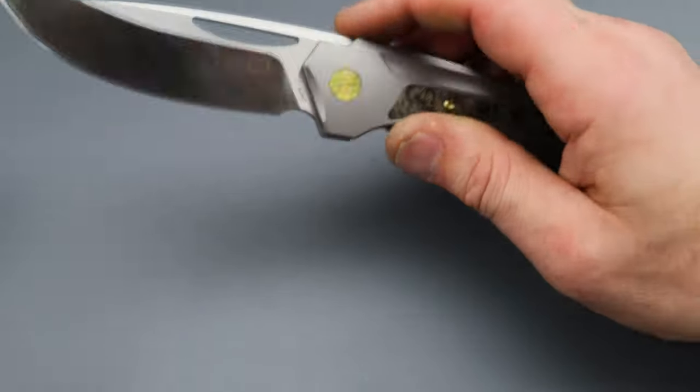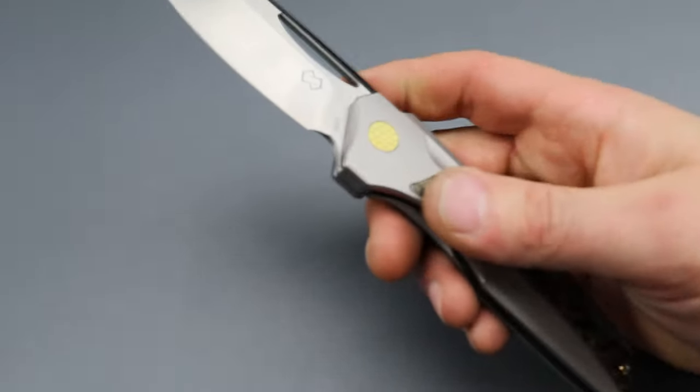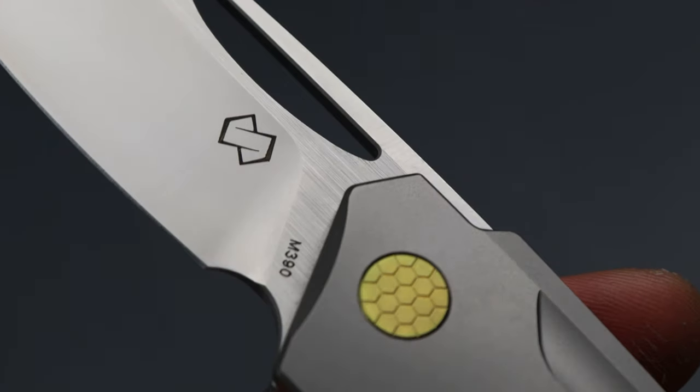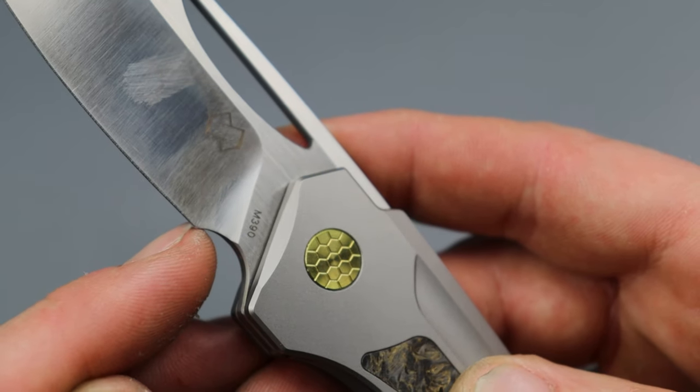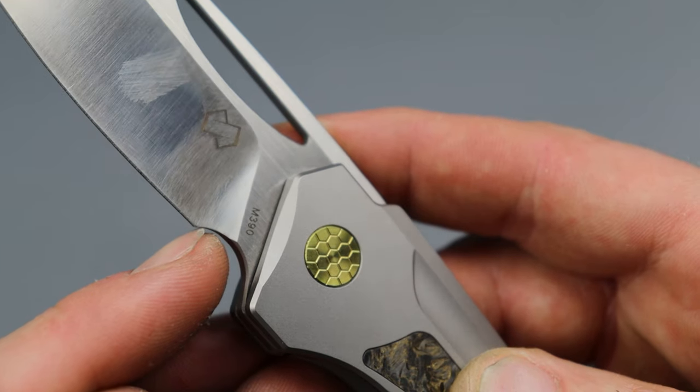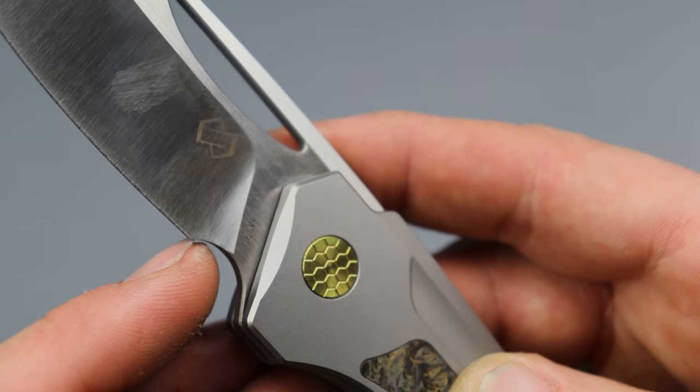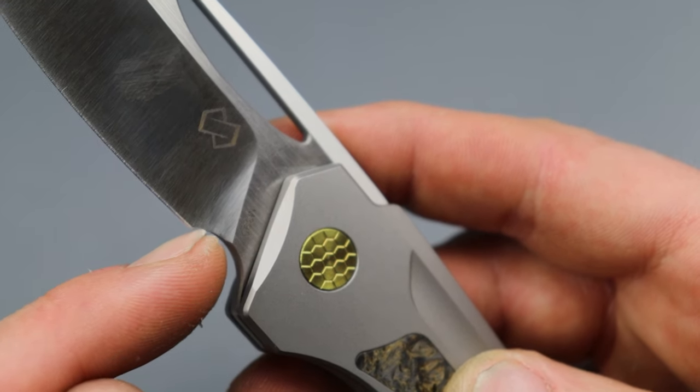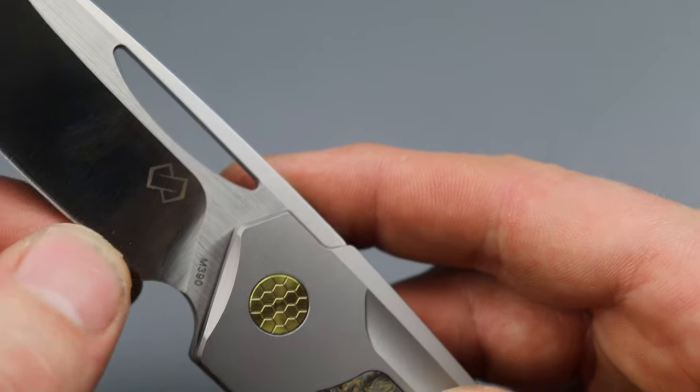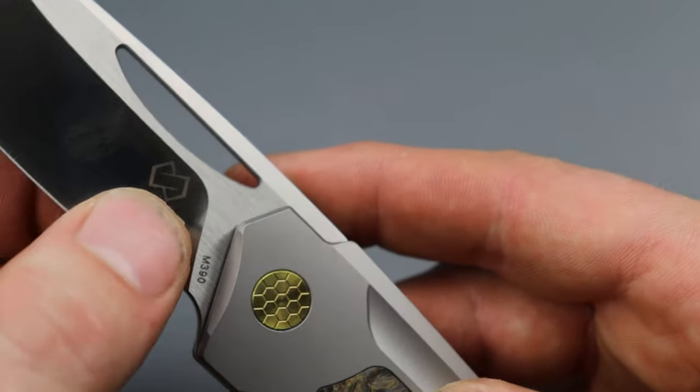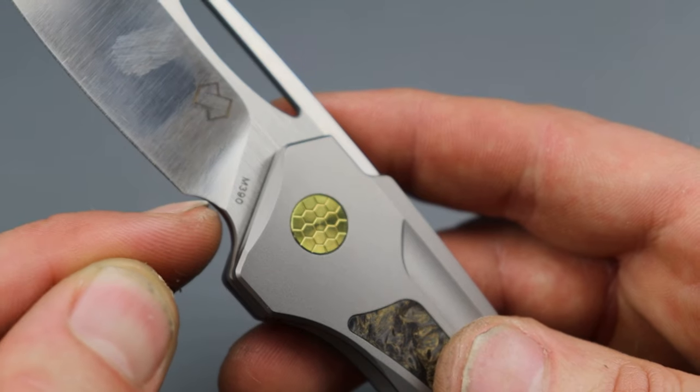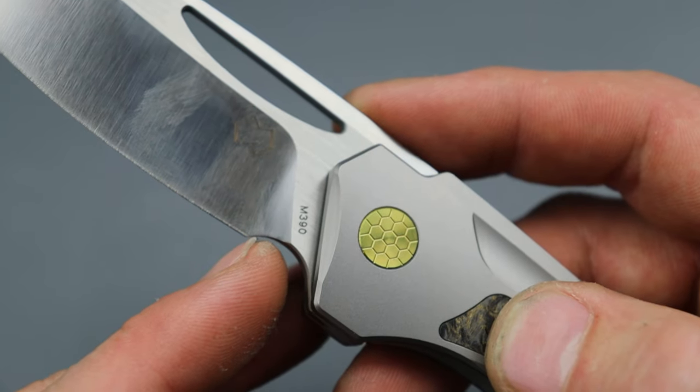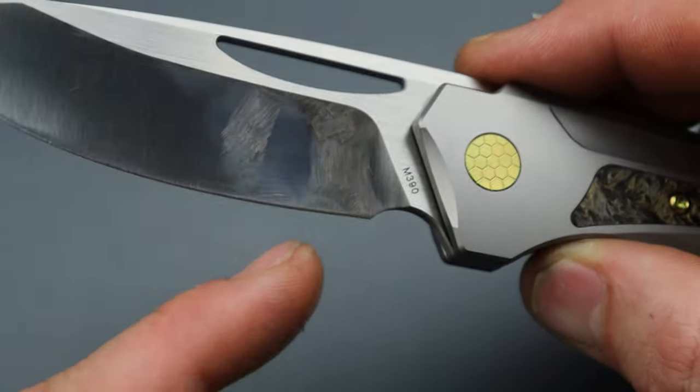So yeah, I'm digging this thing. Negatives, let's talk about some quick negatives. One thing, sharpening choil and plunge grind. That's one thing that they could improve. Move back the end of the plunge grind. You see the plunge grind starts here and it ends at the edge. It tapers down to the edge. You want the end of the plunge grind to be back here so that all this steel right here is the same thickness of the grind.